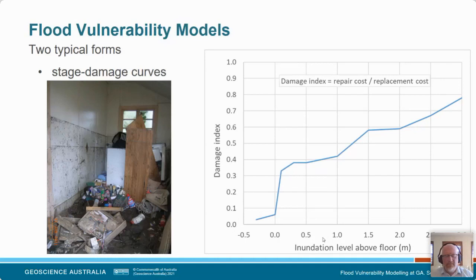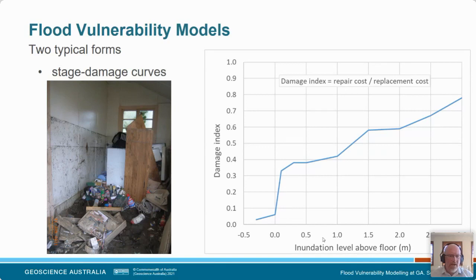In terms of developing these curves — and Martin Wainer is the driver behind just about all of these — we break the house up into between 60 and 100 different components. We have a typical house of a particular type, break it up into those components, look at water levels above the floor in step increases, and at each of those water levels determine what's getting wet, whether it can just dry out, whether it needs to be replaced or needs some repairs. Those costs become rolled up and become part of the damage index.